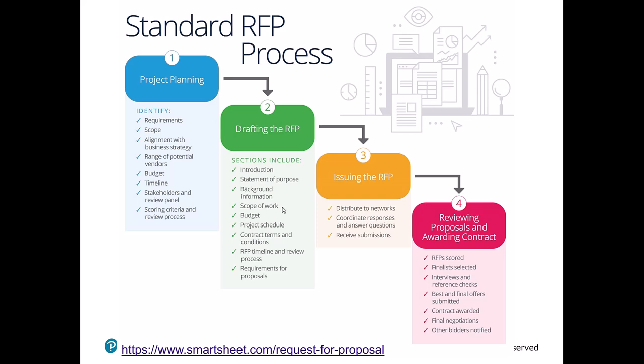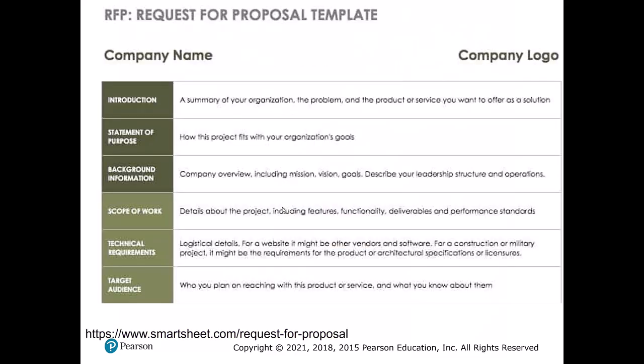After the RFP is drafted, you issue it out. Companies give you proposals back and you review them. This typically involves scoring them on a set of criteria. You select finalists, do interviews and reference checks, and then do final contract negotiations. You end up with a fairly detailed memo because if you don't give the vendor enough information, they won't know enough to accurately quote the project for you.